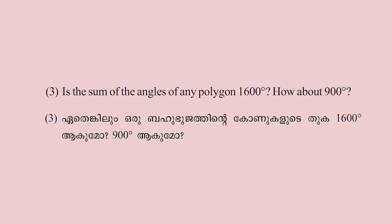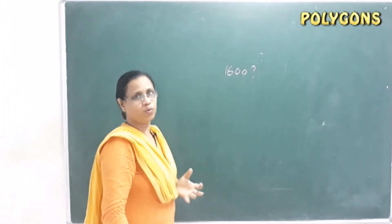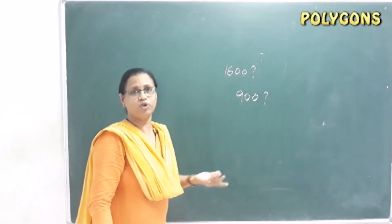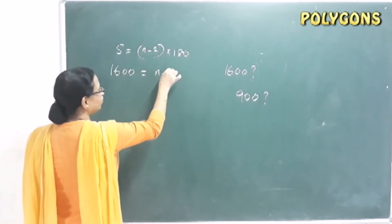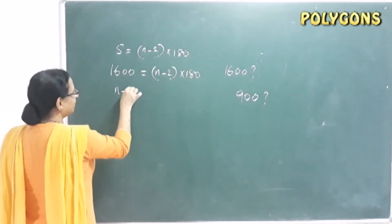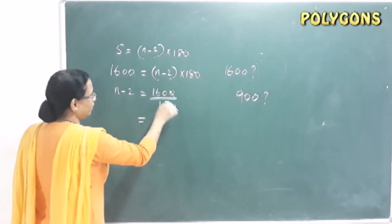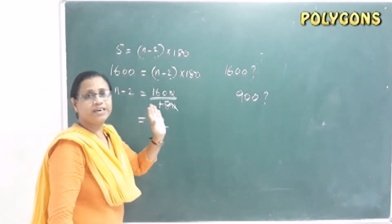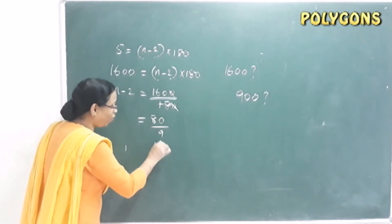Now, is 1600 the sum of the angles of any polygon? We apply the formula: N − 2 = 1600 ÷ 180. Since 1600 is not exactly divisible by 180 (180 × 8 = 1440, 180 × 9 = 1620), 1600 is not a multiple of 180. Therefore, 1600 cannot be the sum of the angles of any polygon.